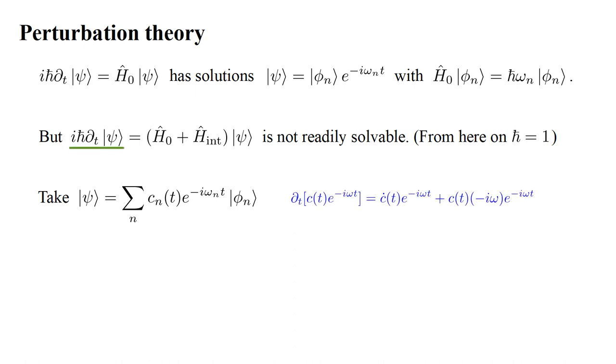For the left side of the Schrodinger equation, i times the time-derivative of the quantum state, the terms in our sum have two time-dependent factors, so the derivatives have two terms: derivative of the first times the second plus the first times the derivative of the second.